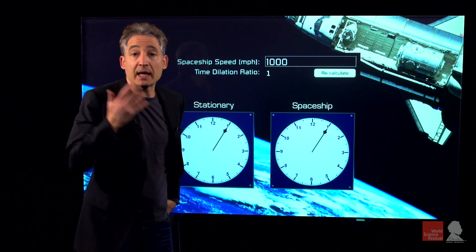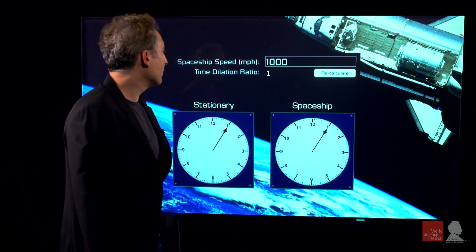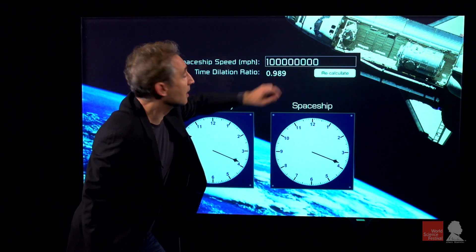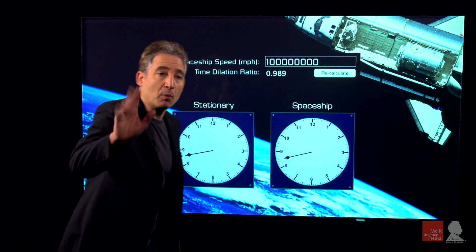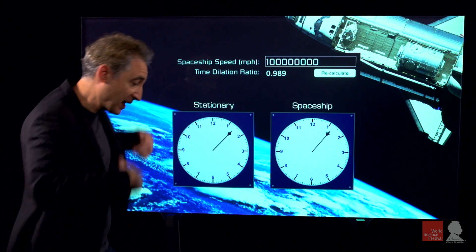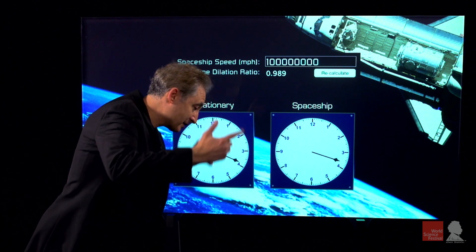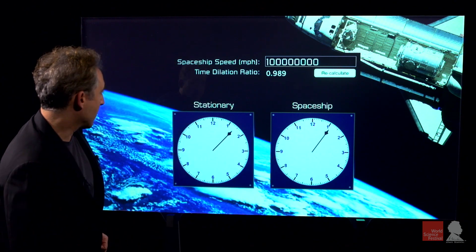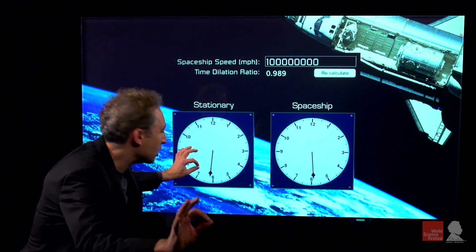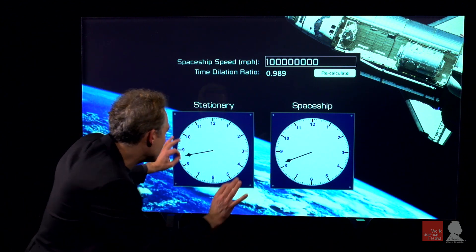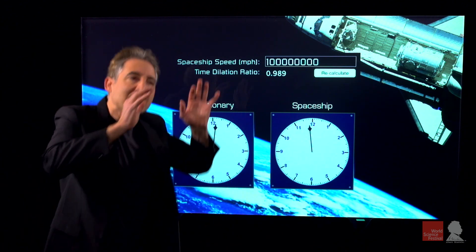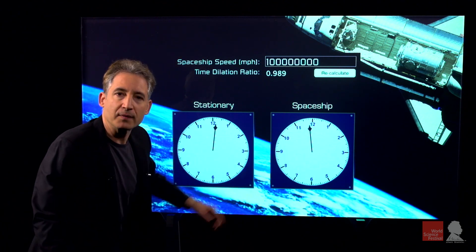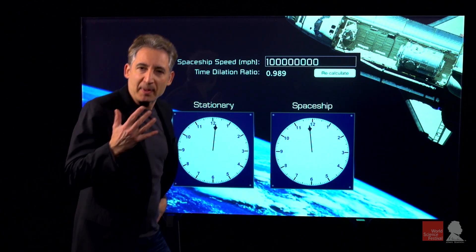But let's take this thousand miles an hour and kick it up to a much higher velocity — a hundred million miles an hour, about one-sixth of the speed of light, fast enough to go around the entire Earth in a single second. There is a slowdown on that clock. If you look really close and squint, you can kind of see it. But still, even at this very high speed, it's difficult to see — not a big slowdown.